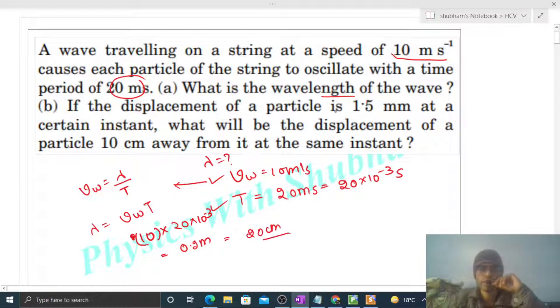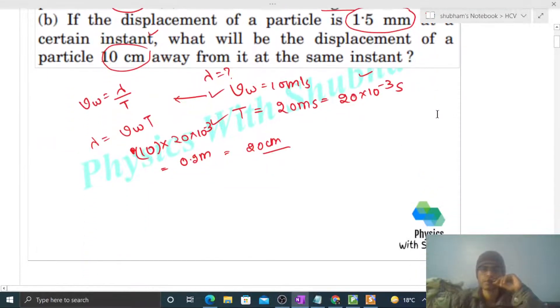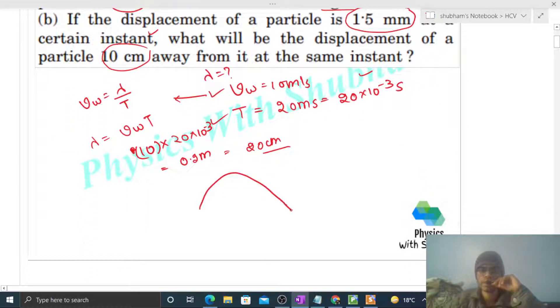If the displacement of a particle is 1.5 mm at a certain instant, what will be the displacement of a particle 10 centimeter away from it at the same instant? Fine, so you see, in this way we have a wave and in this wave we have two particles - one particle A and one particle B.